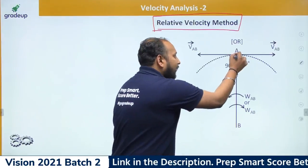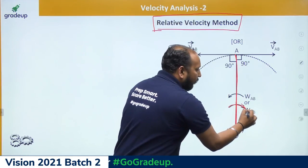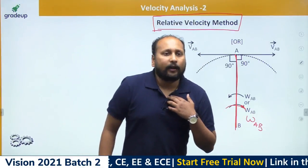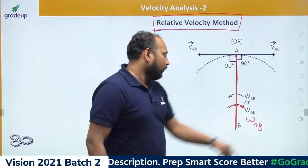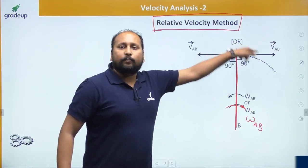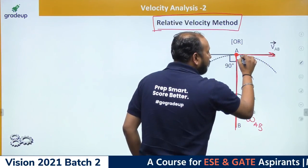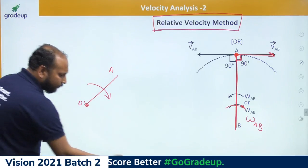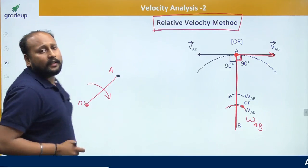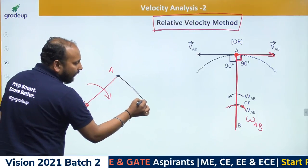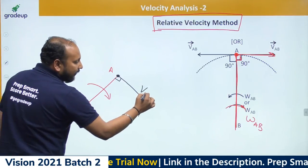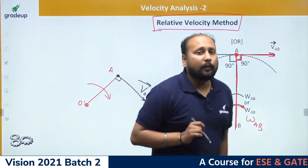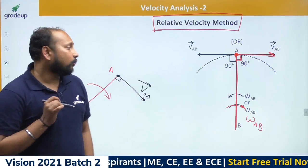Let us assume there is one link AB rotating with an angular velocity omega AB. If I want to calculate the relative velocity of point A with respect to B, that will be a velocity perpendicular to this direction. If a body is rotating — for example, point O with point A — to find the velocity at point A, you draw a perpendicular line in the direction of rotation. This gives the direction of V_AO, the velocity of point A with respect to point O.